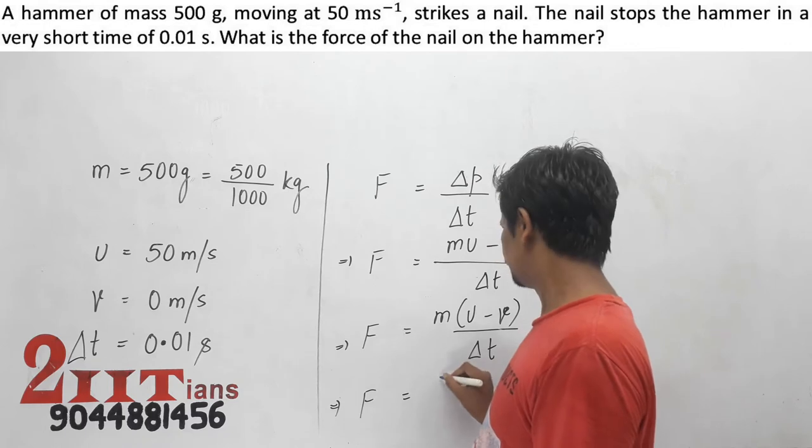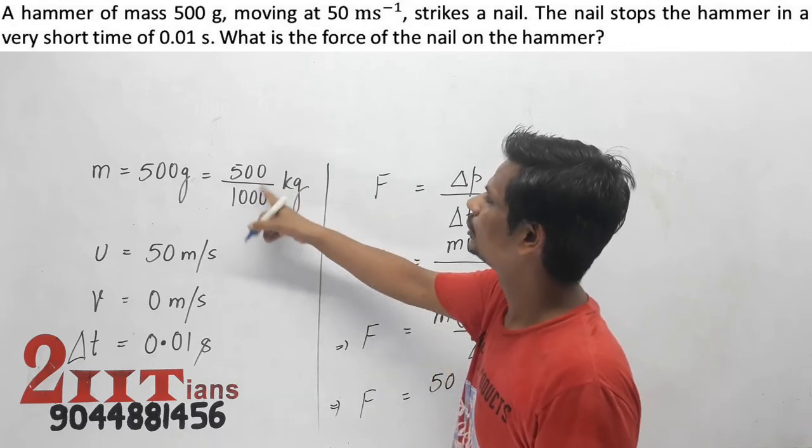This is 500 divided by 1,000, which equals 0.5.